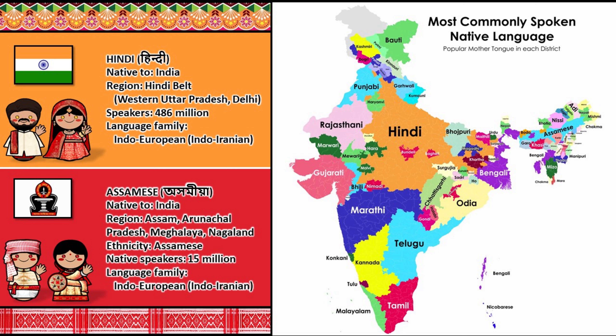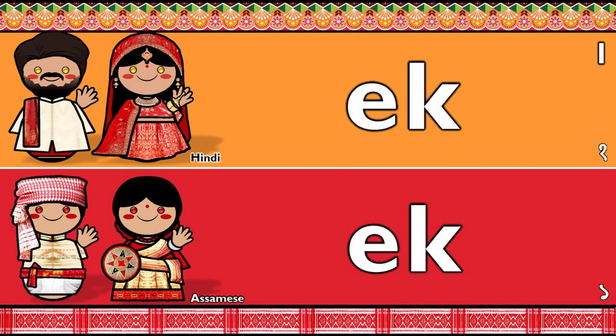Historically, it was the court language of the Ahom Kingdom from the 17th century. The language is written in the Assamese alphabet, an abugida system with many typographic ligatures, written from left to right.